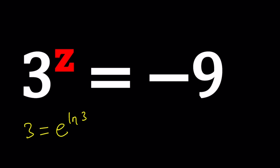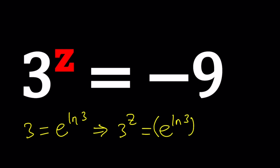So from here, we raise both sides to the power z. You get 3 to the z equals E to the ln(3) to the power z. Then by multiplying the exponents, you get E to the power ln(3)·z, or better written as E to the power z·ln(3). Z is the unknown; E is Euler's number, about 2.7. And we're going to solve for z.